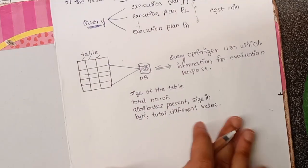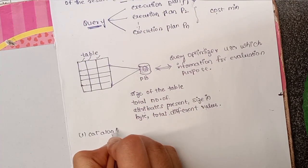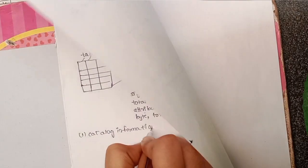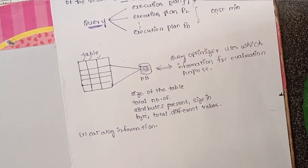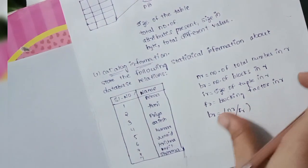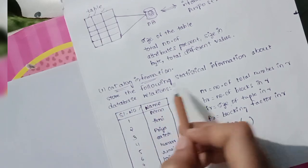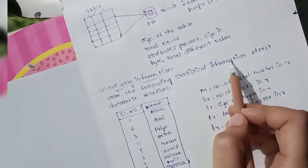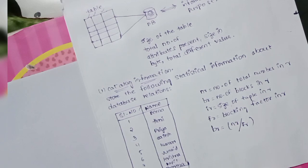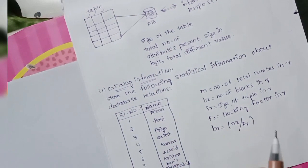Now we discuss catalog information. Catalog information stores the following statistical information about a relational database. We first discuss a statistical formula to represent and store this information.